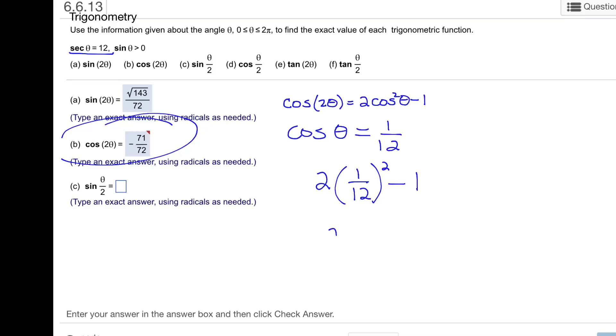And when I calculate this, I have 2 times 1 over 144 minus 1, and that's 1 over 72 minus 1, which is negative 71 over 72. And so that's my final answer.